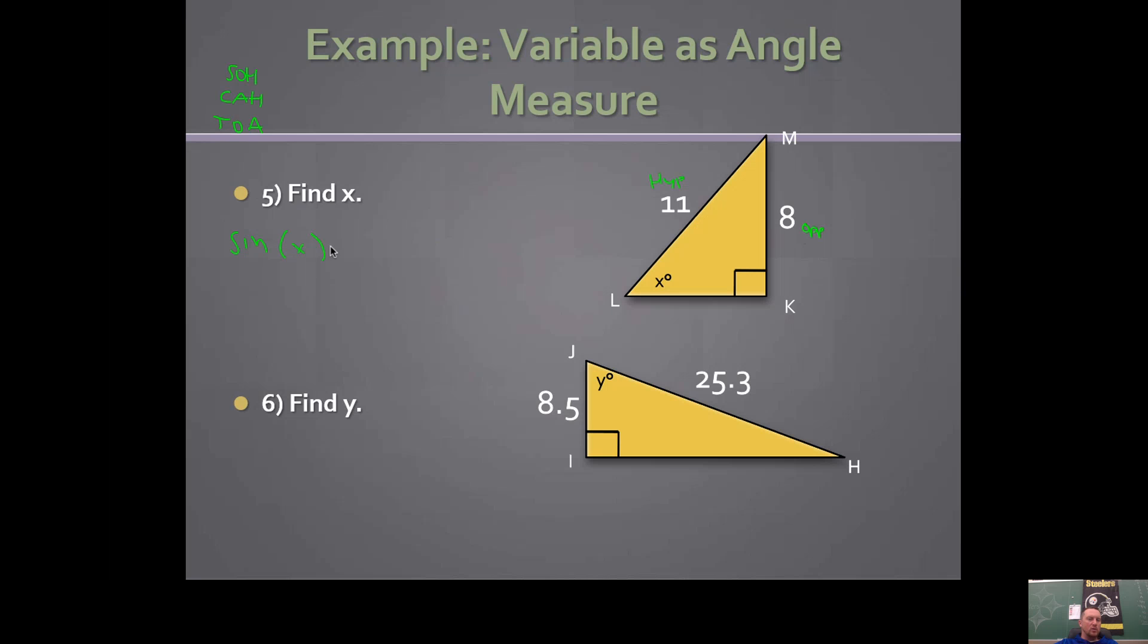The angle is what you don't know. That's what you're trying to find, so that's why the x goes there. The opposite is 8. The hypotenuse is 11.